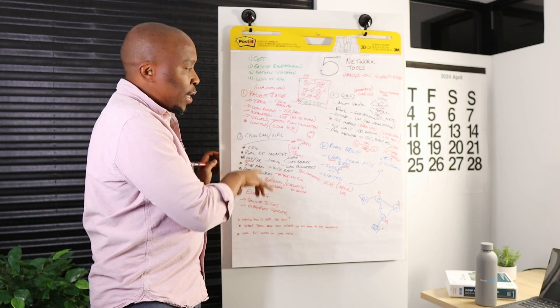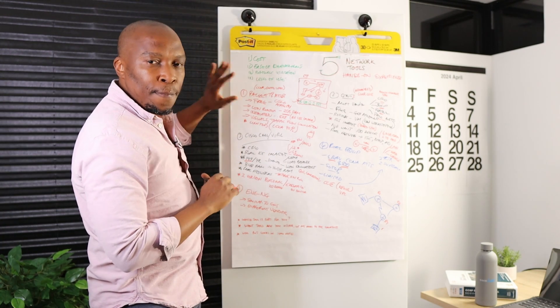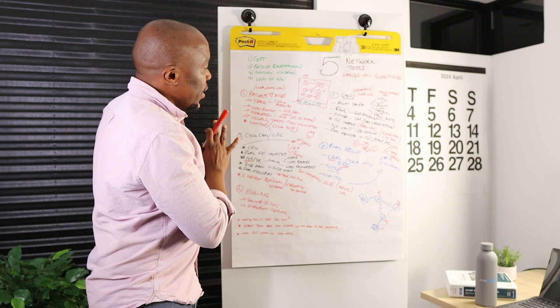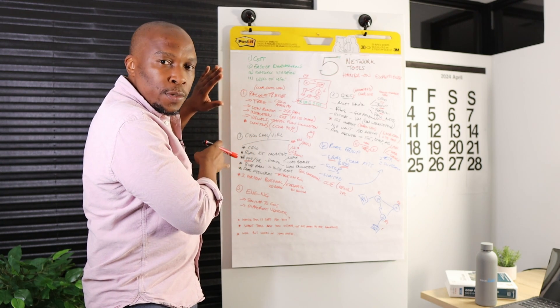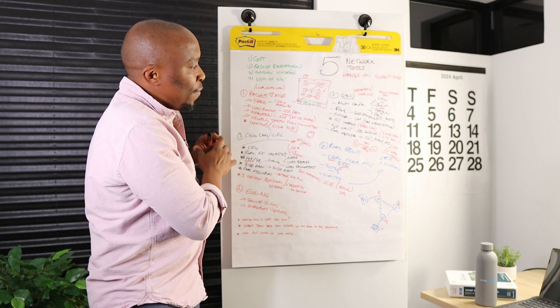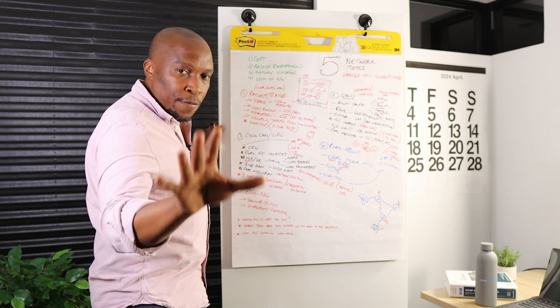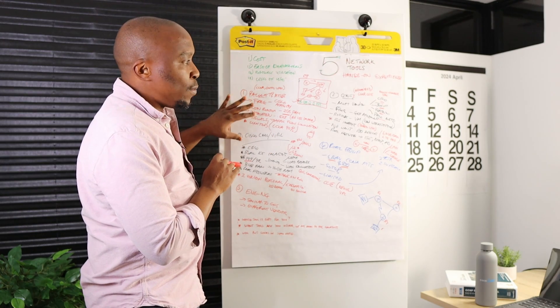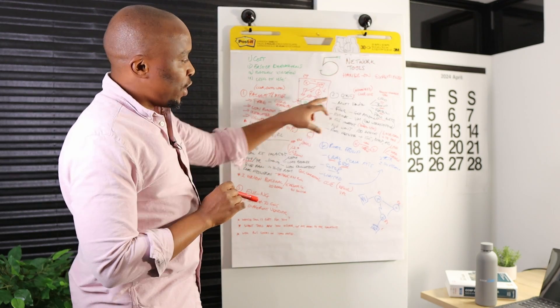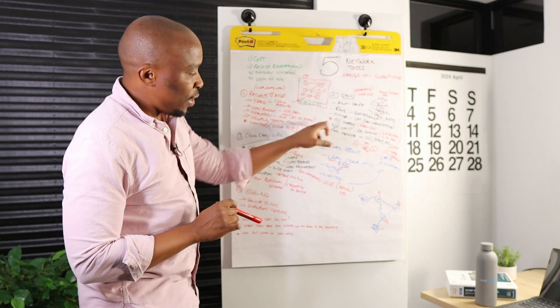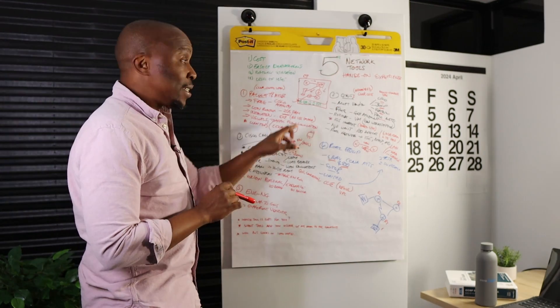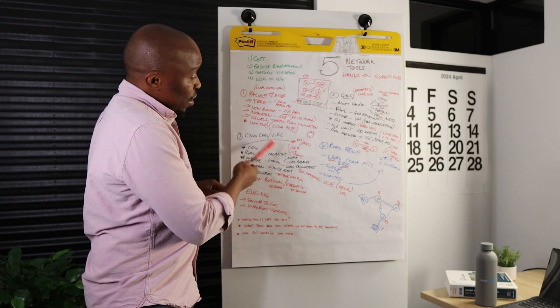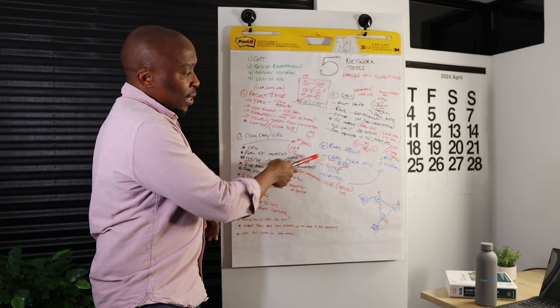CCNA and below entry level, Packet Tracer is the best tool. It's going to require the least amount of effort to get it up and running, and it's going to give you more than what you need in order for you to practice. When you have graduated from Packet Tracer and you want more advanced commands, GNS3 and EVE-NG are probably going to be your next step. And depending on what it is that you want to accomplish, then you can probably use Cisco VIRL and the real equipment.